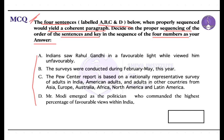Look into the first statement: 'Indians saw Rahul Gandhi in a favorable light while viewed him unfavorably.' This statement indicates that people have a view about Rahul Gandhi — when they saw him in a favorable light, while others viewed him unfavorably. So option A is a kind of negative statement, beginning with a negative statement.